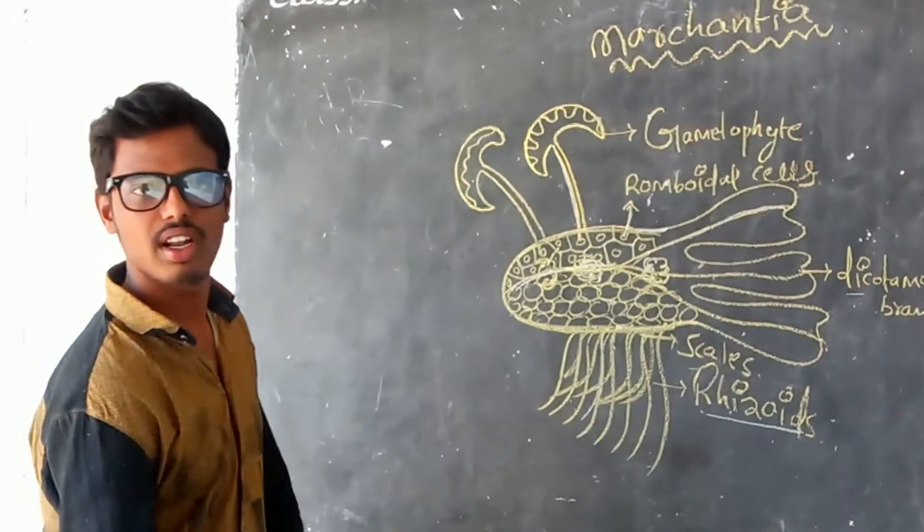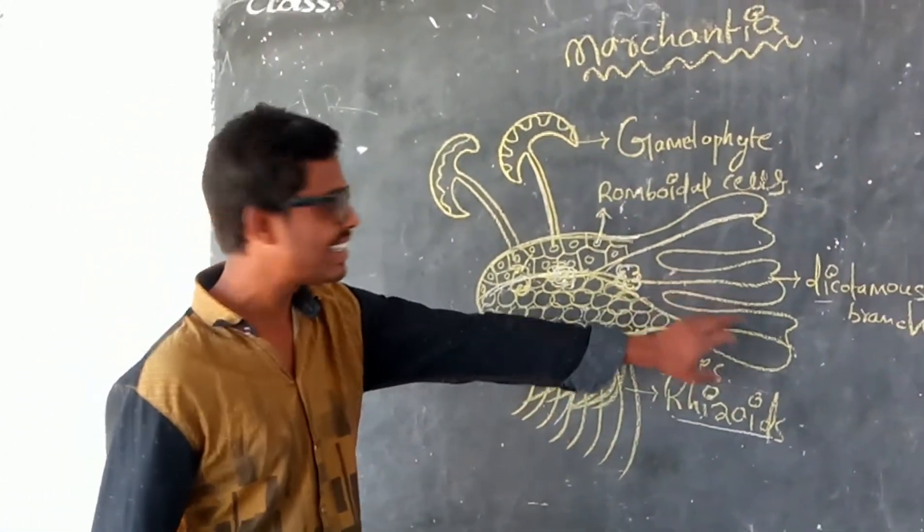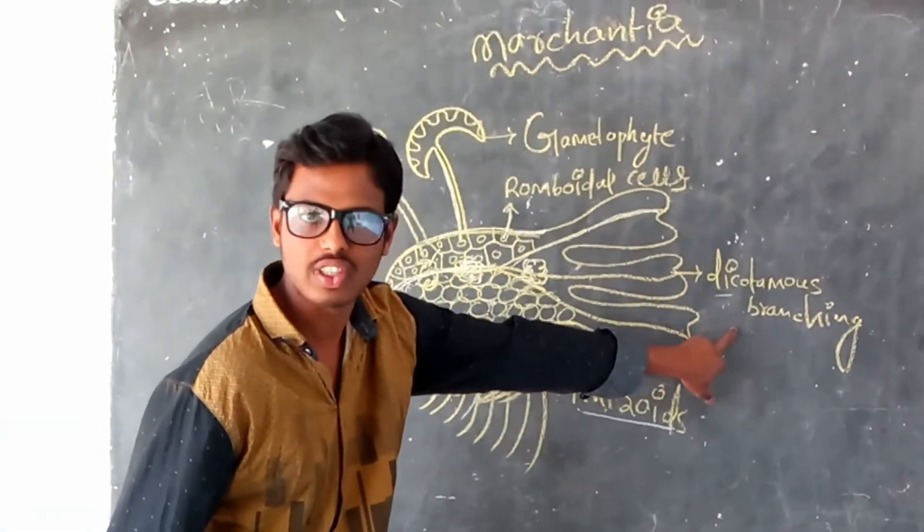Marchantia is dorsally and ventrally differentiated structure. At the end of the thallus, dichotomous branching is present. Two types of branching we have to see in the thallus plant.